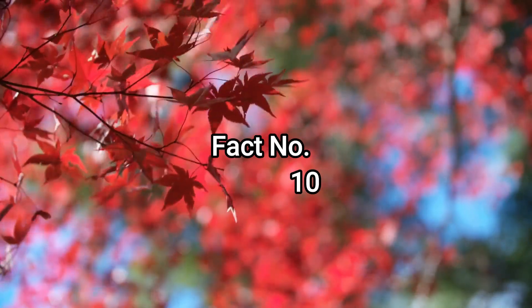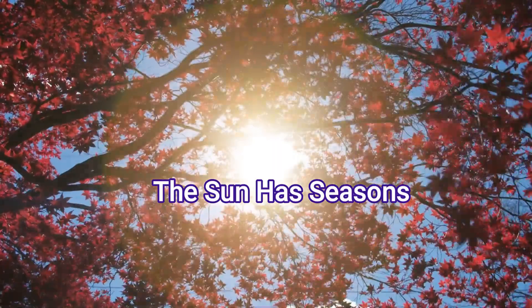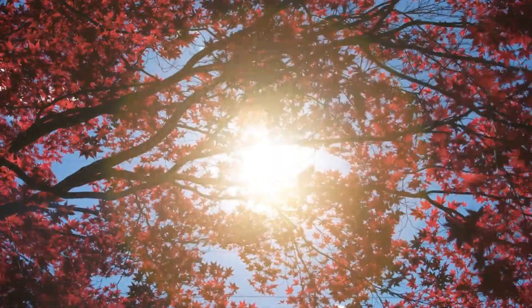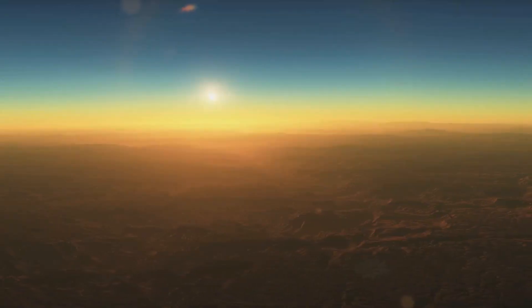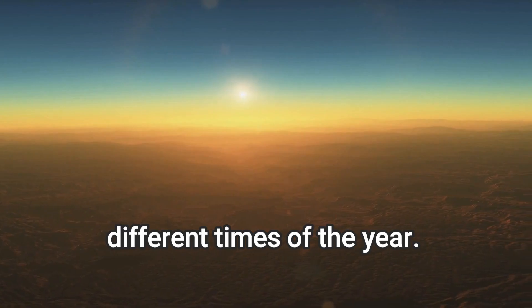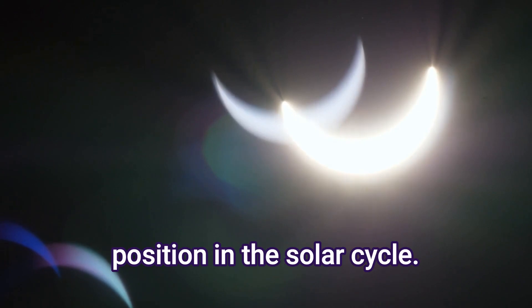Fact number 10, the sun has seasons. Just like the Earth, the sun also experiences seasons. This is due to the tilt of the Earth's axis, which causes different parts of the Earth to receive different amounts of sunlight at different times of the year. Similarly, different parts of the sun receive different amounts of sunlight depending on its position in the solar cycle.